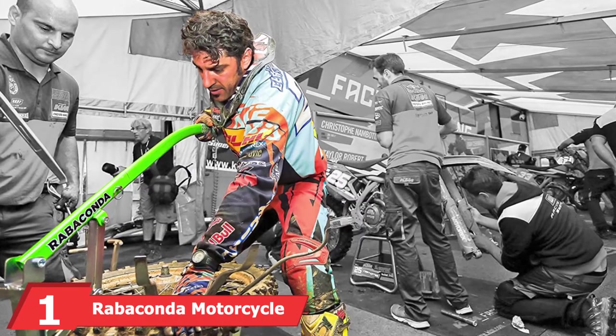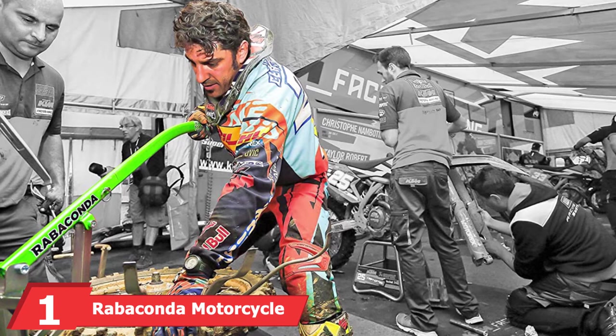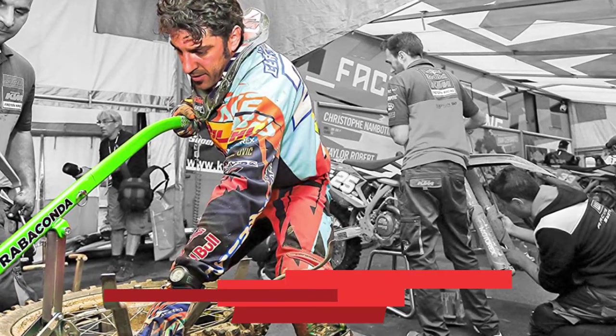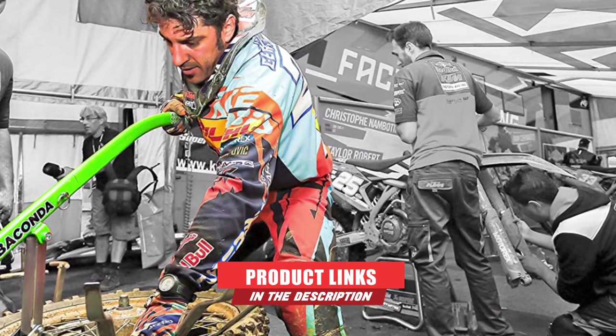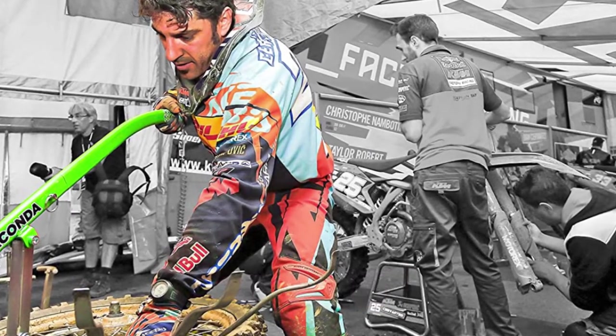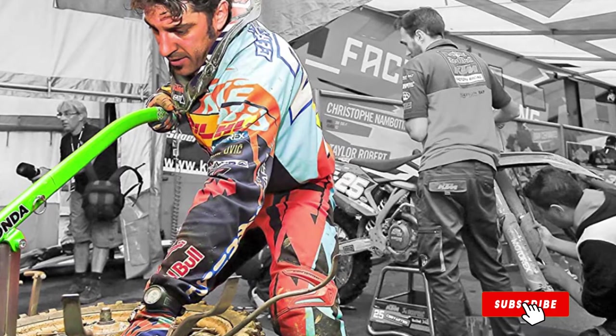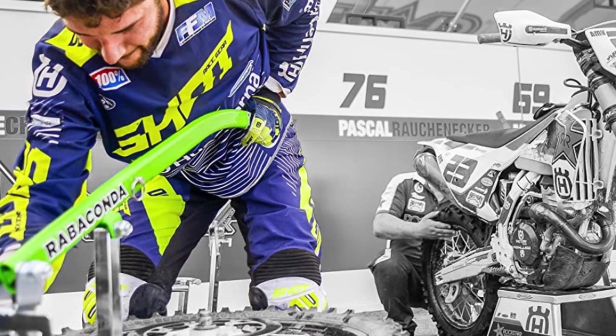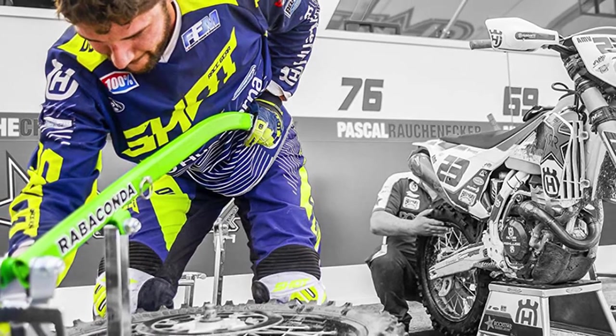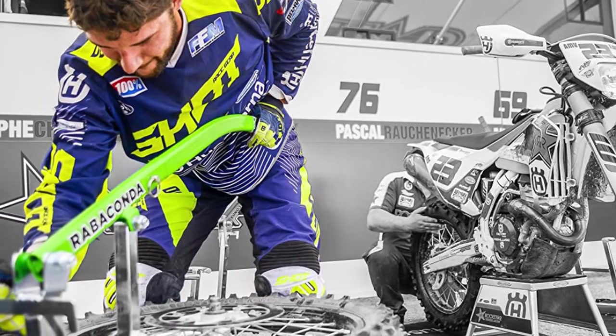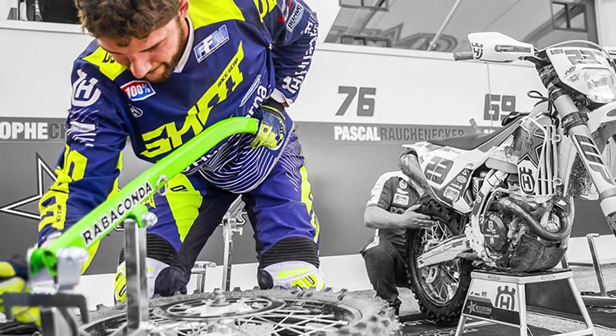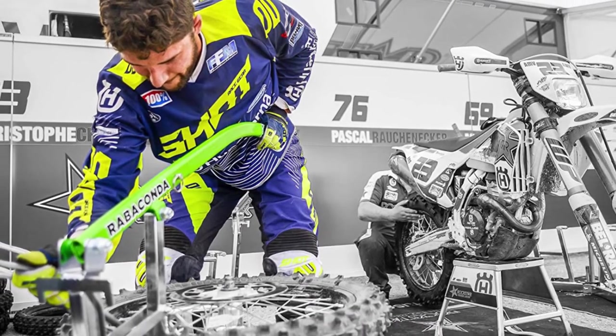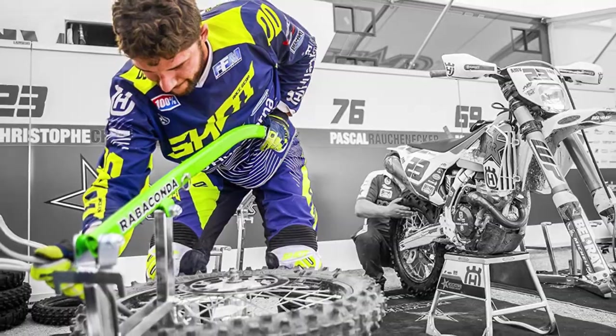At the first position of our list, we have Rabaconda Motorcycle Tire Changer Machine. The Rabaconda is designed to provide the quickest and easiest process, and it actually delivers. In fact, this is the official tire changer of the International 6 Days of Enduro and approved by the American Motorcycling Association. It even set the world record for motorcycle tire changes, getting the job done in just 44 seconds.